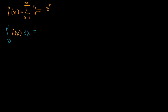We're told that f(x) is equal to the infinite series, going from n equals one to infinity, of (n+1) over 4 to the (n+1) times x to the n. What we want to figure out is the definite integral from zero to one of f(x). If you feel inspired, pause the video and see if you can work through this on your own, or pause at any time while I'm working through it.